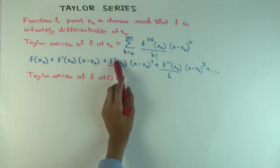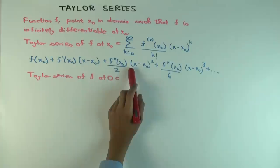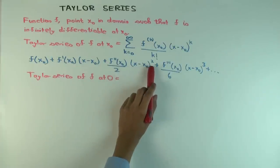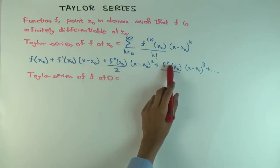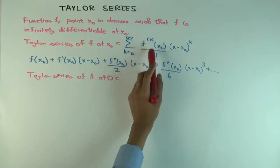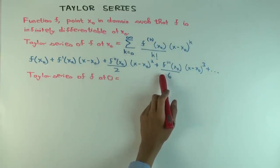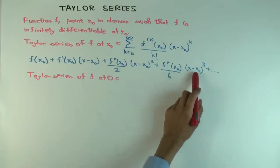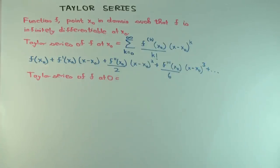The next term, f, the second derivative of f at x0 over 2 factorial. 2 factorial is just 2 because it's 1 times 2. Times x minus x0 to the second power. The next one is the third derivative of f at x0, k equals 3 divided by 3 factorial. 3 factorial is 1 times 2 times 3, that's 6 times x minus x0.